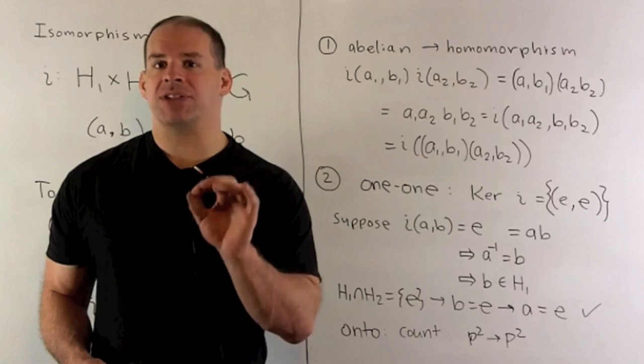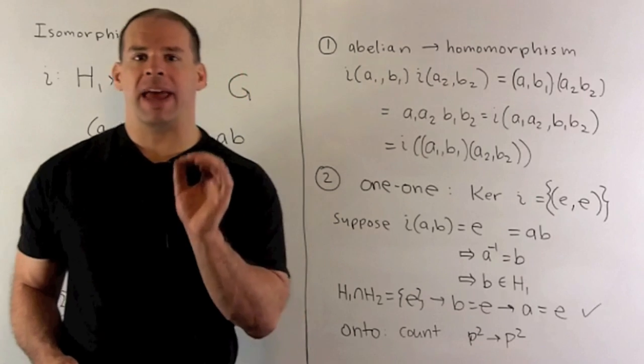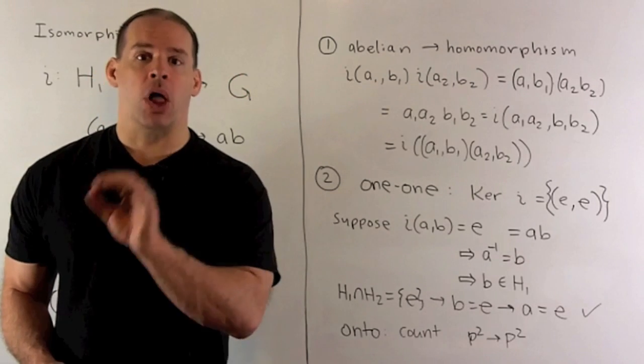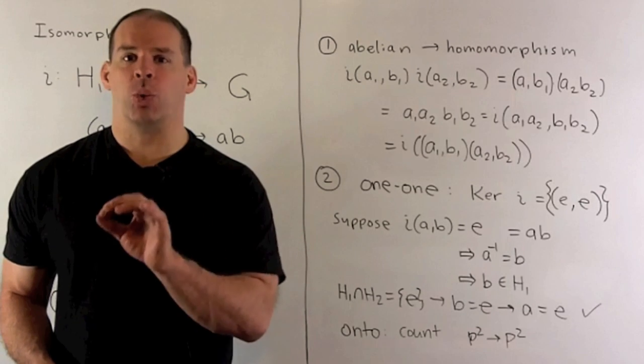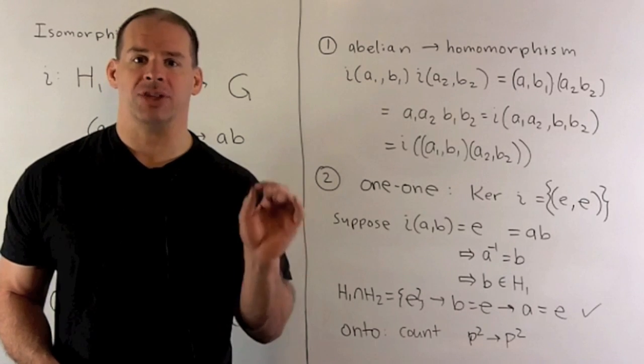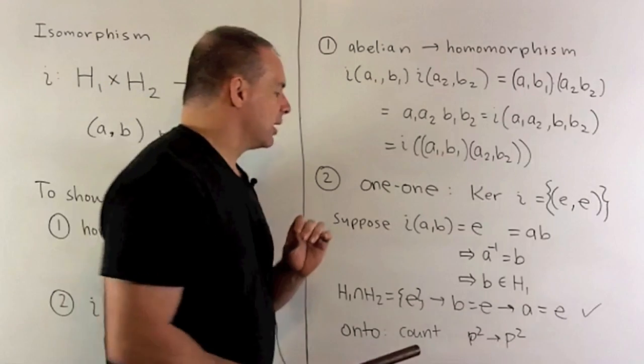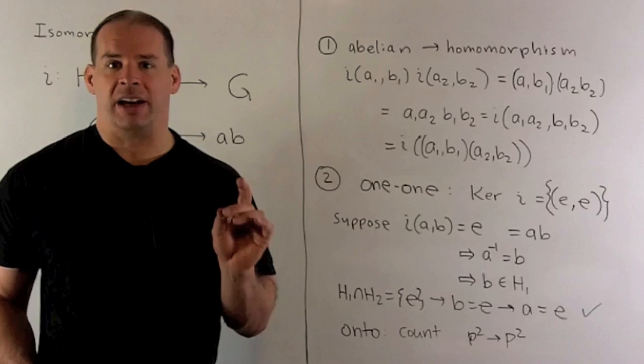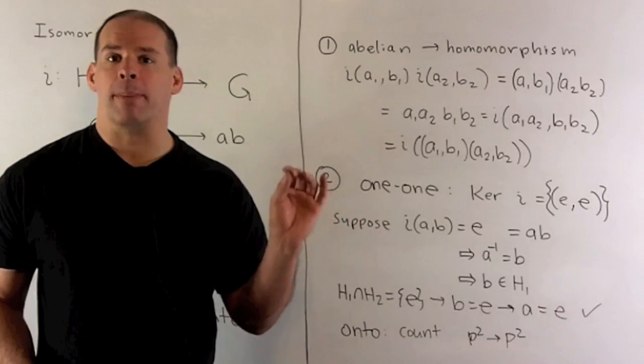If I have an element x of order p in H1 and H2, well that element x is going to generate subgroup of order p. So it's all of H1 and all of H2. So the intersection is H1 and H2, so they're equal. Now that means b is the identity. So a is also going to be the identity, which means our pair is (e, e). So that means our map is one-to-one.